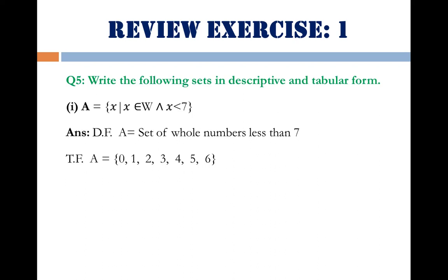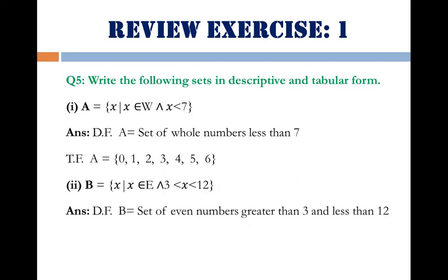These are the whole numbers less than 7, written within braces. Part 2: B = {x | x ∈ E and 3 < x < 12}. E stands for the set of even numbers. The descriptive form is: set of even numbers greater than 3 and less than 12. The tabular form lists even numbers greater than 3 and less than 12: {4, 6, 8, 10}.